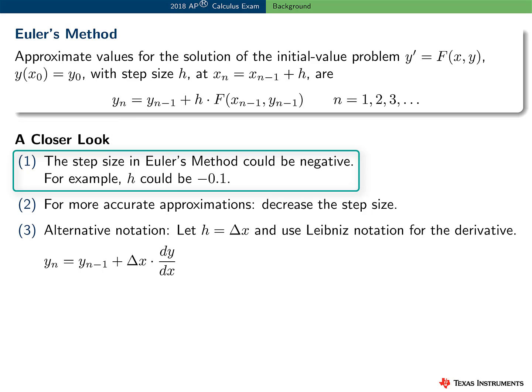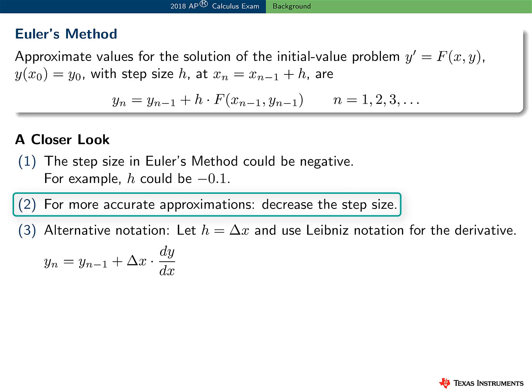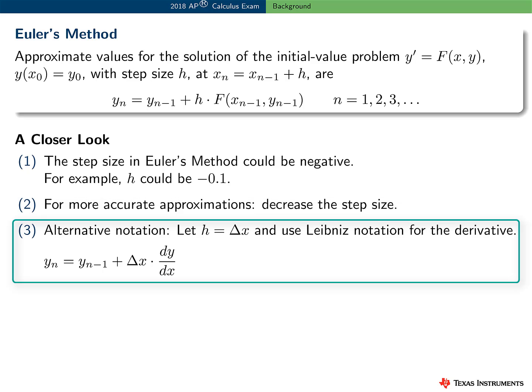First, the step size could be negative. We could find successive approximations to the solution curve by moving to the left along the x-axis. And I think we've already seen visually that for better, more accurate approximations, we can decrease the step size. Here is some alternative notation that is often used. If we let h be equal to delta x and use Leibniz notation for the derivative, then y sub n is equal to y sub n minus 1 plus delta x times dy dx.